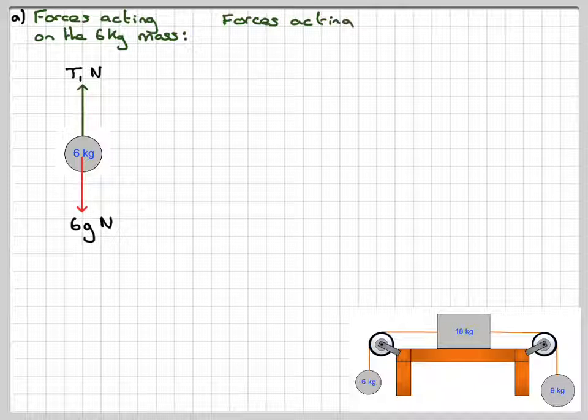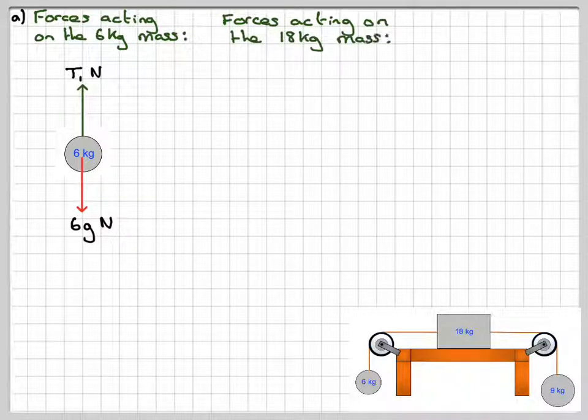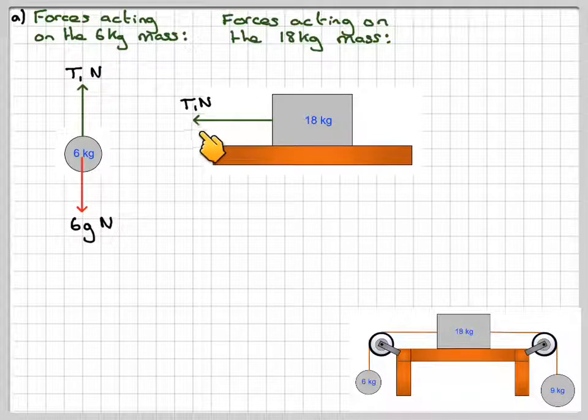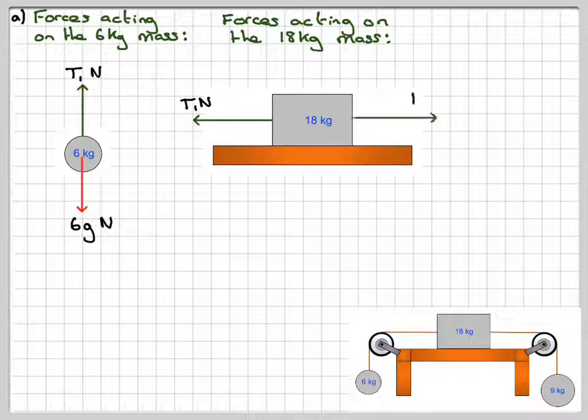The forces acting on the 18 kilogram mass. So we have the tension here. This has to be the same as this tension. So we'll call it T1N. And then we've got the tension of this string, which we're going to call T2N.